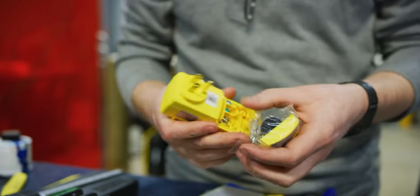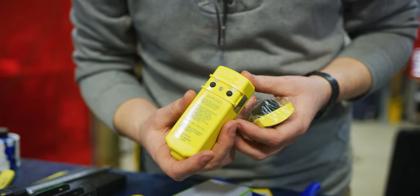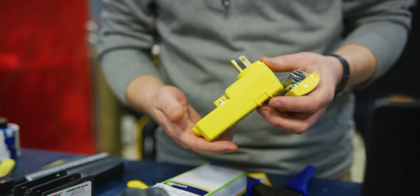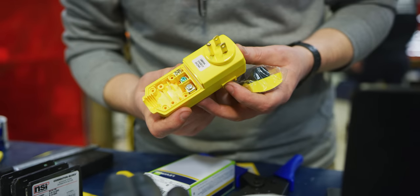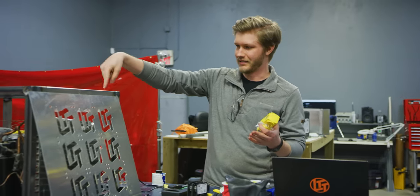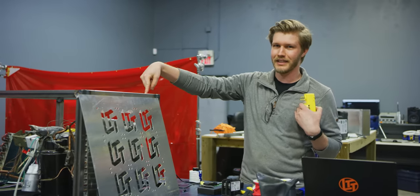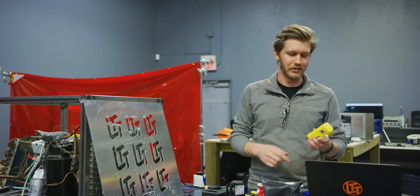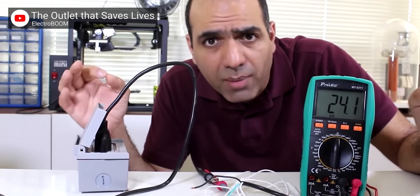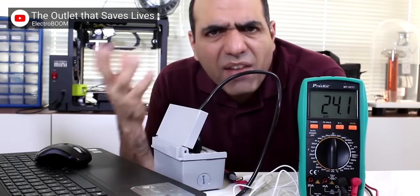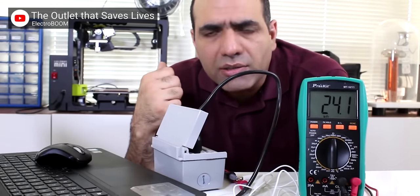Basically how this works is that it's constantly monitoring the current going into the live and out of the neutral. So if it sees that there's a difference between those two, it means that maybe current is going like between this chassis and my body, in which case it's like pop. And instead of me getting electrocuted, I just need to go over and hit reset. ElectroBoom has a really good video on this. If you want to figure out how it works a bit better, but this should save our bacon in the case that something in here leaks.